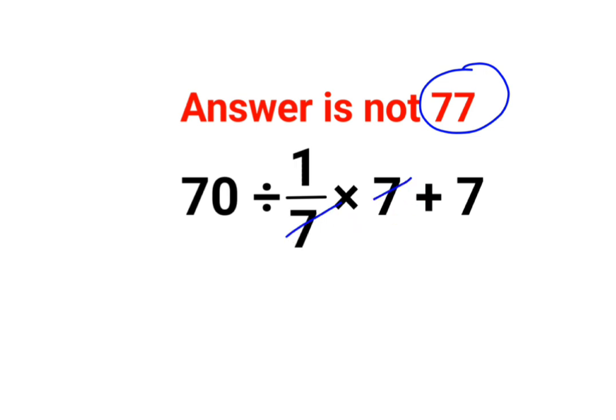Looking at 70 divided by 1/7 multiplied by 7 plus 7, people thought the 7s get cancelled, so this eventually comes out to be 70 divided by 1 plus 7. That gets you 70 plus 7. That's why they thought the answer is 77.